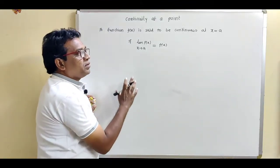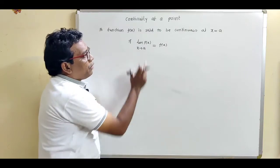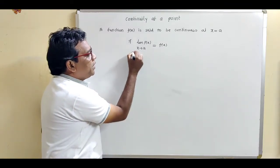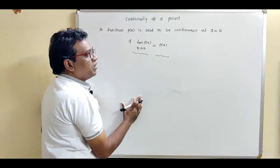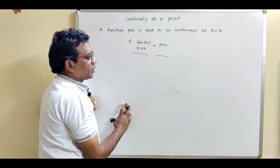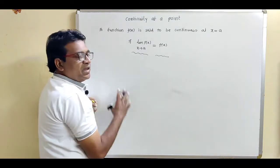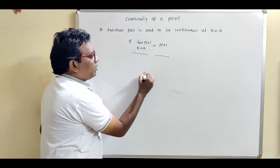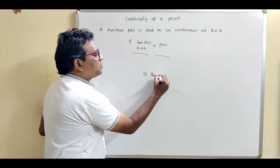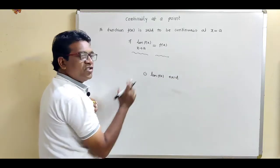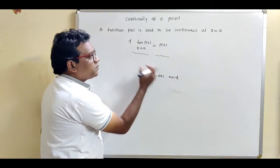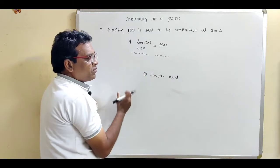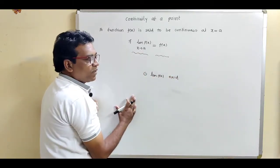A function f(x) is said to be continuous at x equal to a if the limit of the function is the same as the value of the function. For the definition of continuity, there are two requirements. First, the limit of the function should exist — this is the prior condition. If the limit does not exist, we cannot compare it with the value of the function, so the function is definitely discontinuous.